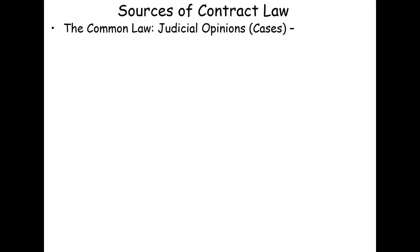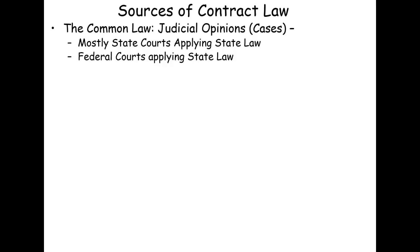Let's first remind ourselves about the basic sources of contract law in the United States. The most important source is the Common Law — judicial opinions, cases resolving disputes between parties where one party has sued another to present a breach of contract action. The Common Law is mostly state courts applying state law, though occasionally we'll see a federal court involved, but federal courts will still almost always be applying the state law of contracts.